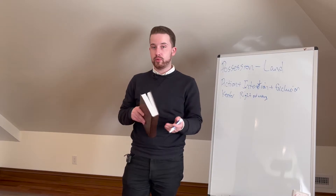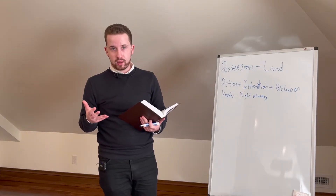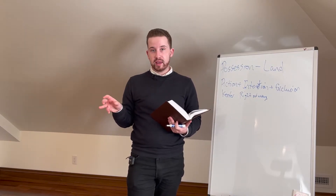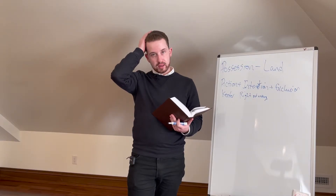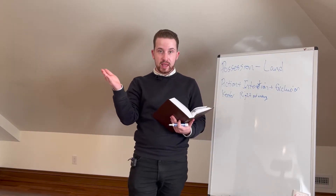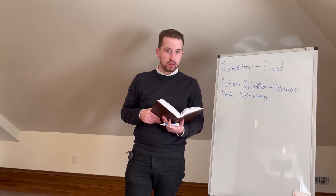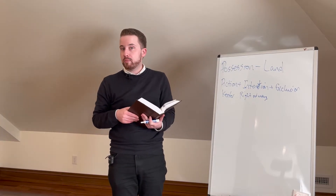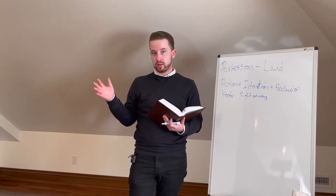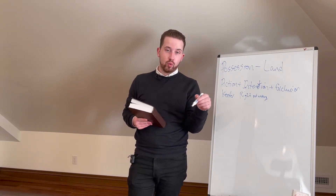A right of way is not the same as a license. A license is a right to do something that would otherwise be illegal, generally for a very limited period of time. For example, if you go to a concert and buy a ticket, that ticket is a license to be in the stadium where you otherwise wouldn't have a right to be. It's essentially paid toleration. In contrast, a right of way is a property interest — it's more significant and persists over time.